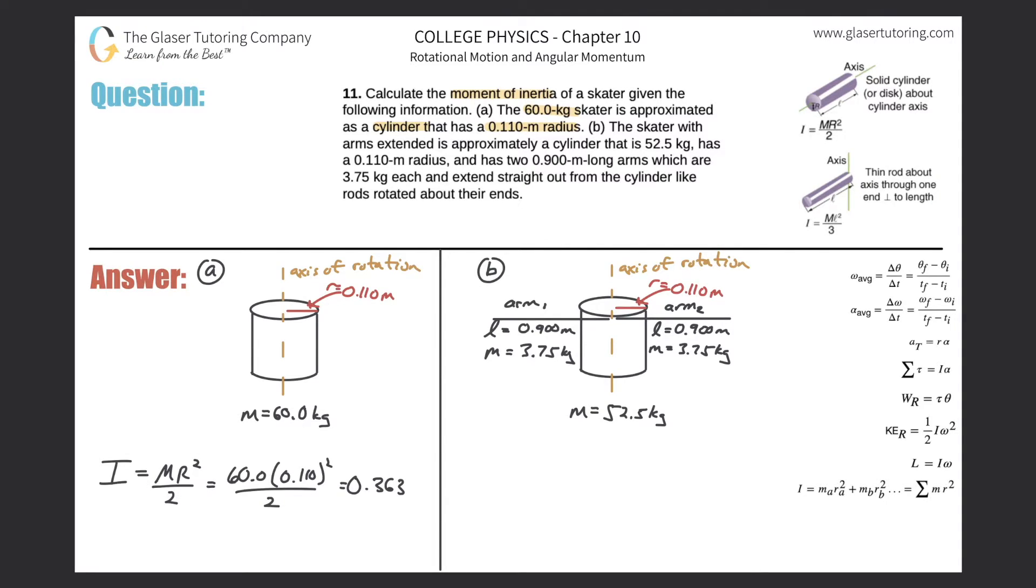We'll do three sig figs, so 0.363. The units here—you can always reference the formula—mass is in kilograms, radius in meters, so therefore this should be kilogram meter squared.